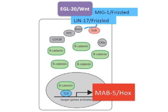These Wnt pathway components include TCF, beta-catenin, and multiple frizzleds. Canonical Wnt signaling activation in the Q-neuroblast ultimately results in expression of the Hox gene MAP5, which is both necessary and sufficient for posterior migration of Q-daughter cells.